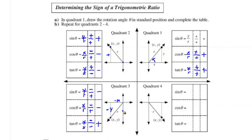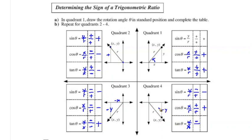So the only ratio positive in quadrant three is tangent, because negative y divided by negative x is positive. In quadrant four, sine is y over r — negative y over positive r — so sine is negative. Cosine is positive x over positive r — that's positive. And tangent is negative y over positive x, which is negative. So in quadrant four, only cosine is positive.